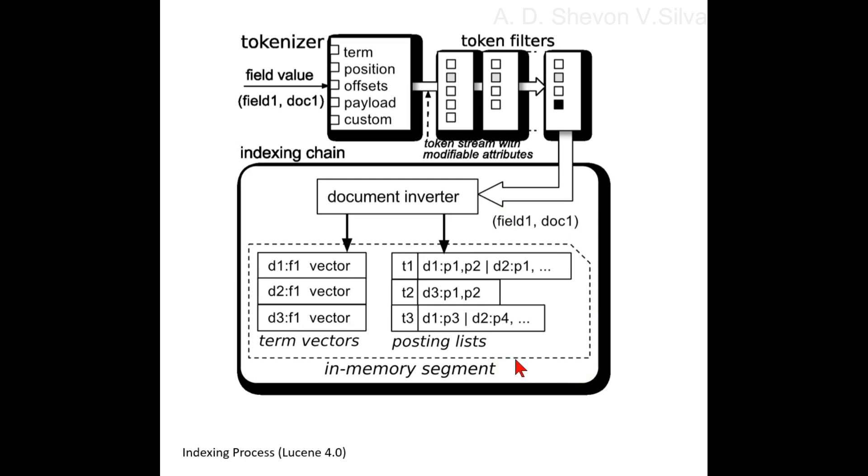Offset and payload data are added to the respective position posting list for each term. Term values don't have to be UTF-8 strings as in previous versions. Lucene 4.0 fully supports arbitrary byte array values as terms and can use custom comparators to define the sorting order of such terms.